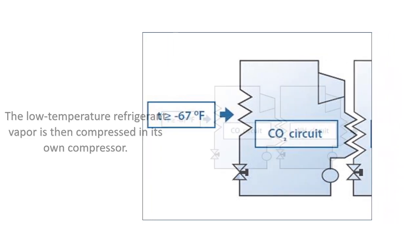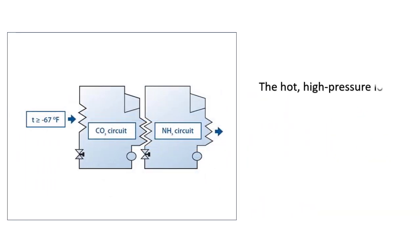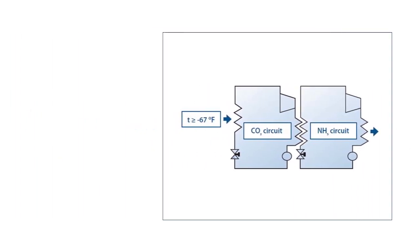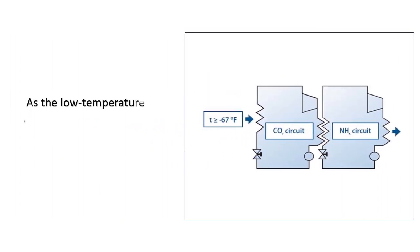The hot, high-pressure low-temperature refrigerant gas flows through the cascade condenser, where it is cooled by the condensed high-temperature refrigerant. As the low-temperature refrigerant cools down, it condenses back into a liquid state.